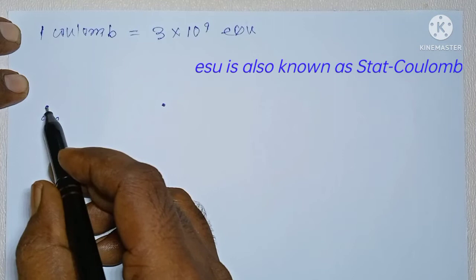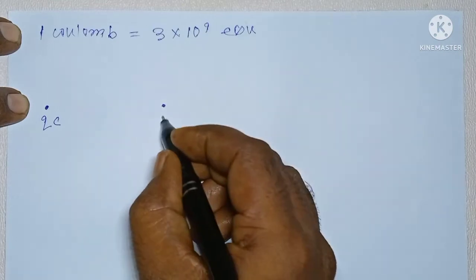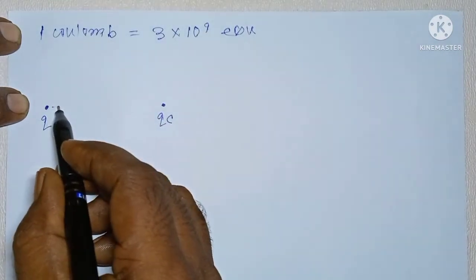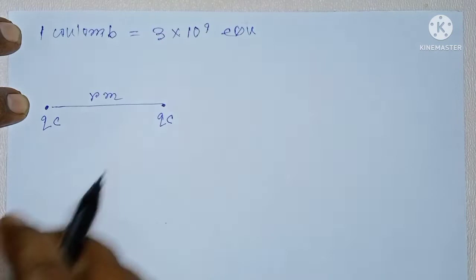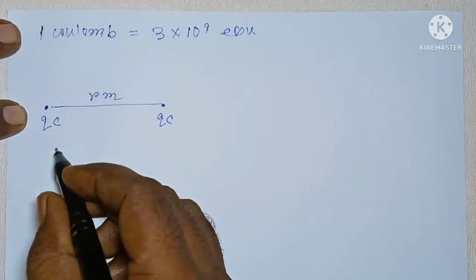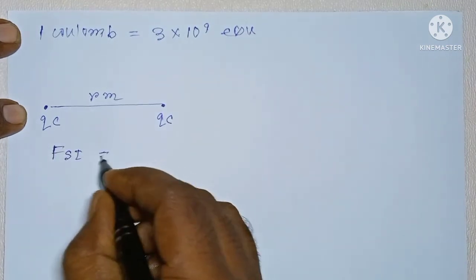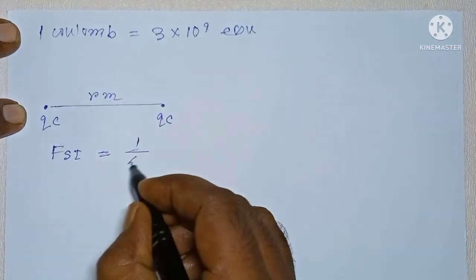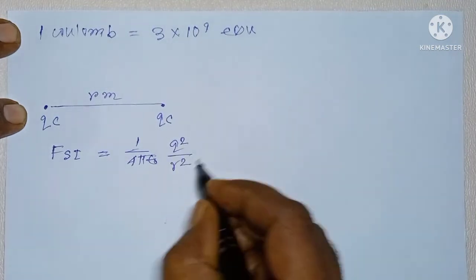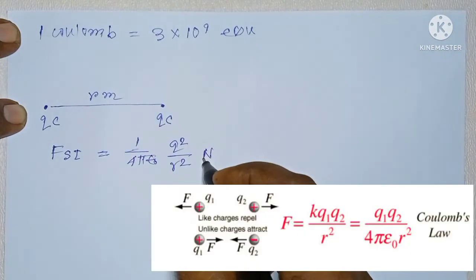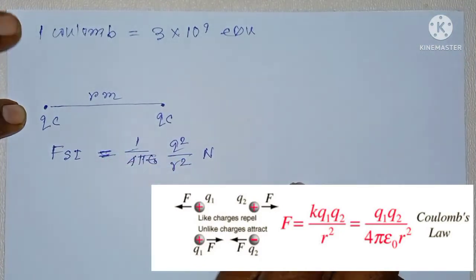To prove this equality we consider that we have two point charges both of Q coulomb separated by distance R meter in vacuum. So, the force between these two point charges in SI unit system will be equal to 1 upon 4 pi epsilon naught Q square upon R square Newton. This is according to Coulomb's law as we already know this.